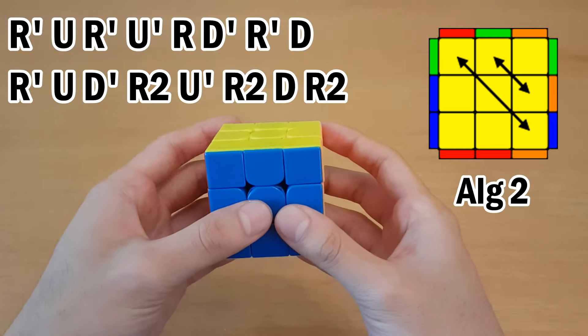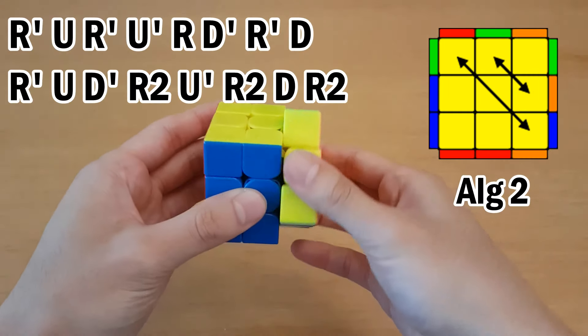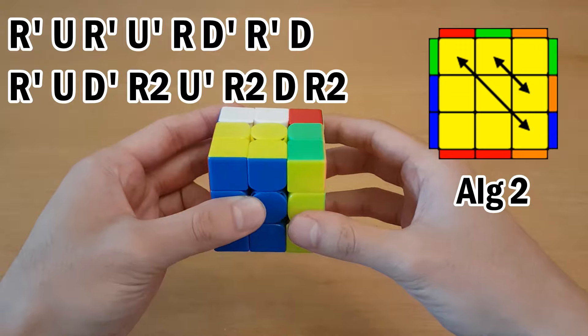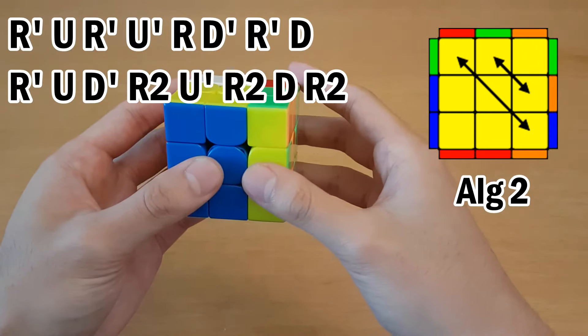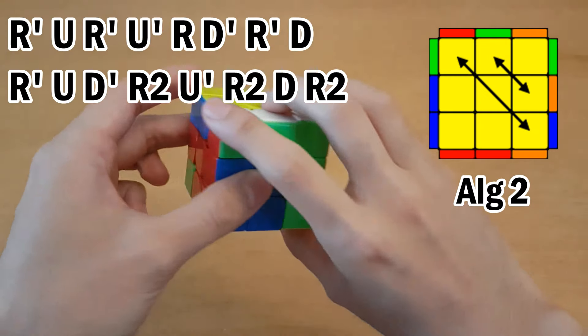Now, for this V-perm, it has gained a lot more popularity recently. And I've been shown that the finger trick is supposed to be done like this right here, instead of doing it like this, which I've always done it like that. Instead, you should put your thumb here and do this drag finger trick while doing that.